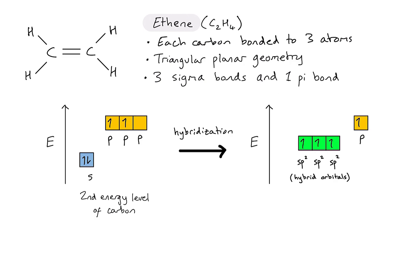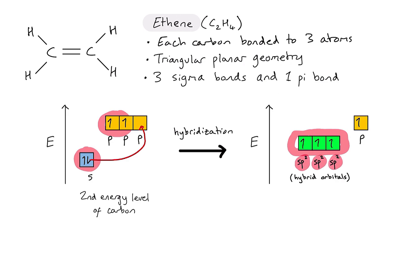One electron is promoted, and then the s orbital and two of the p orbitals are combined in the process of hybridization, producing three new hybrid orbitals of intermediate energy. Because we've used an s orbital and two p orbitals, each of those new orbitals is called an sp² hybrid orbital. Also left over in this process is an extra p orbital which has one electron.